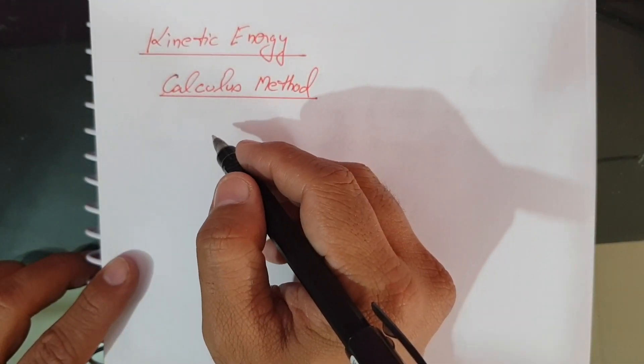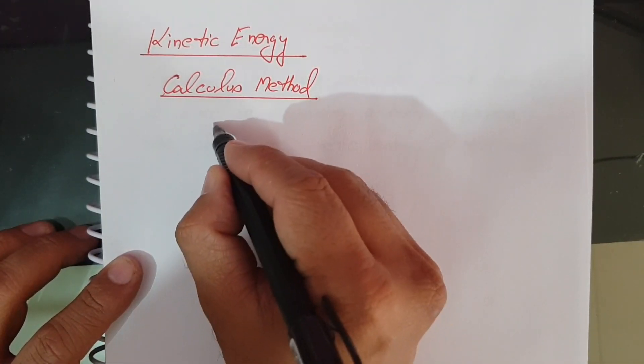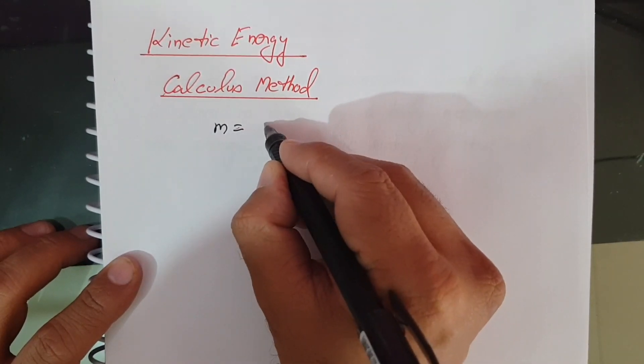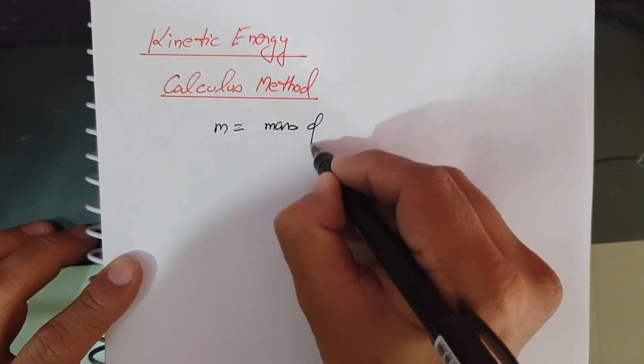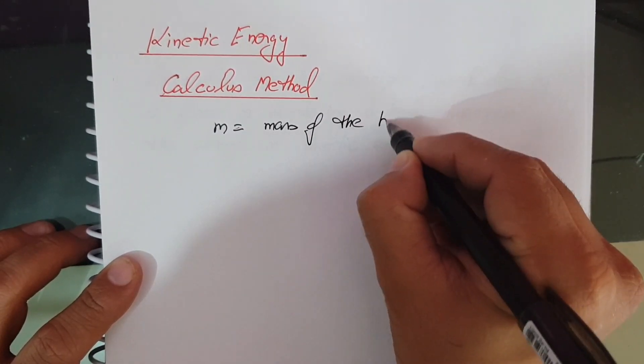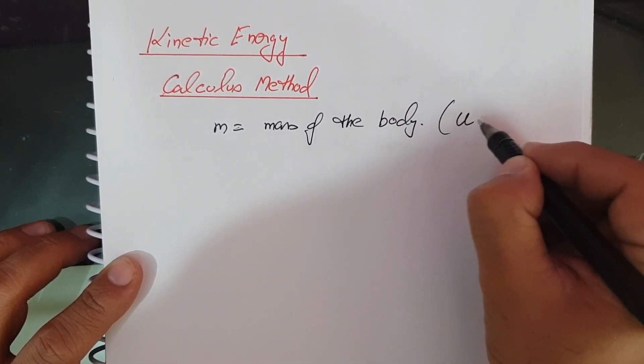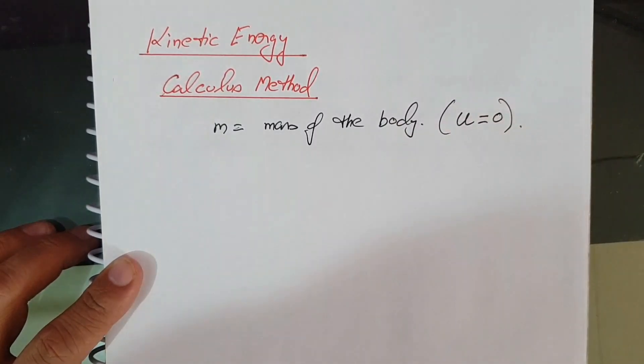Take M as the mass of the body which is initially at rest. So U equals zero.